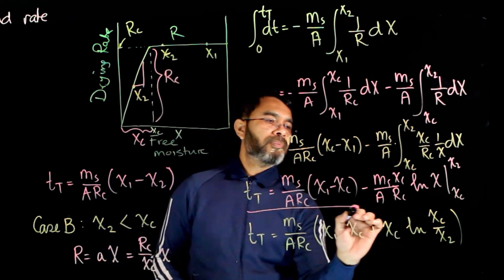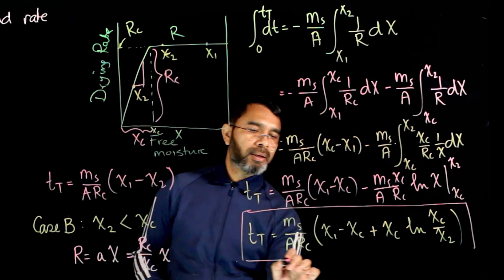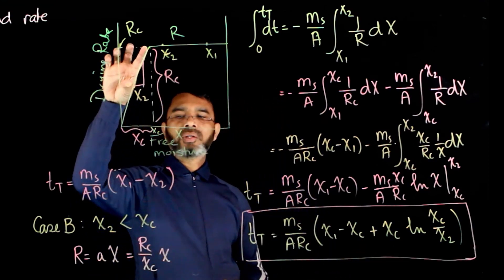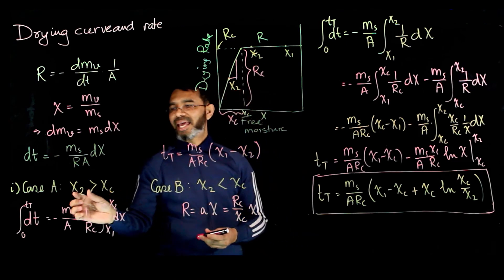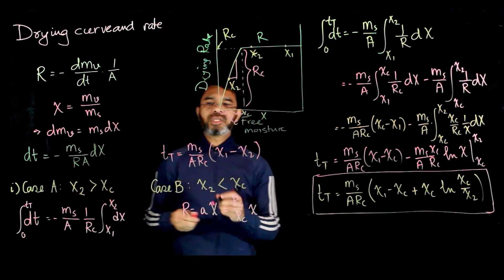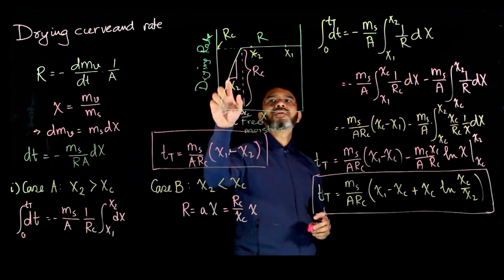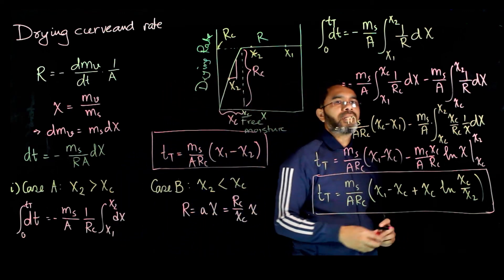xc over x2. So this is the expression for total time for drying when x2 is less than xc. Do remember that if the x2 value is greater than xc, you need to use this equation, and when x2 value is less than xc, you need to use this equation.